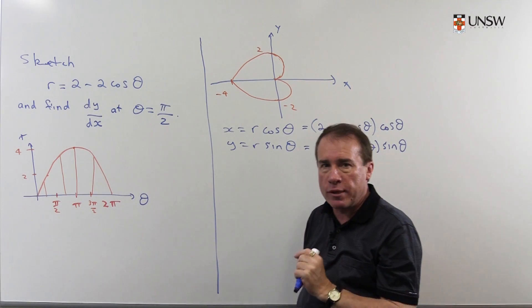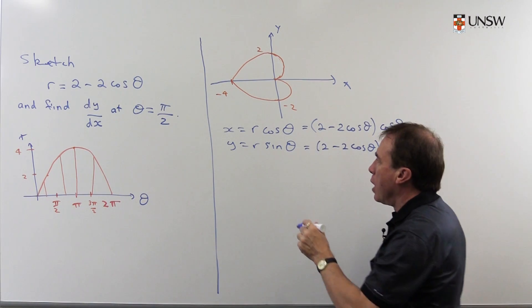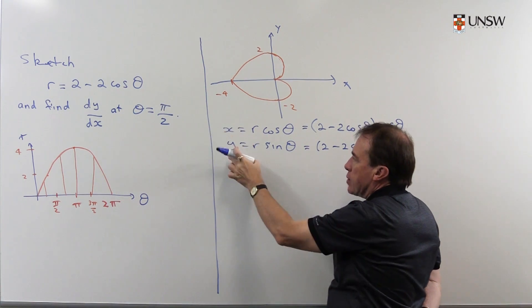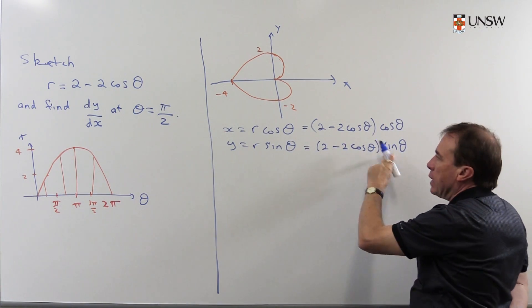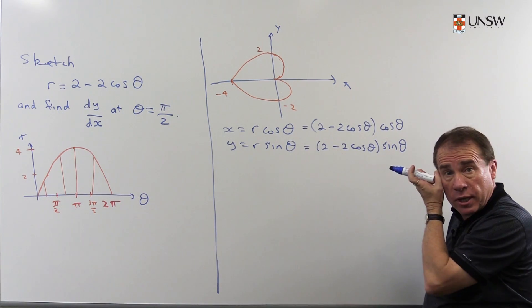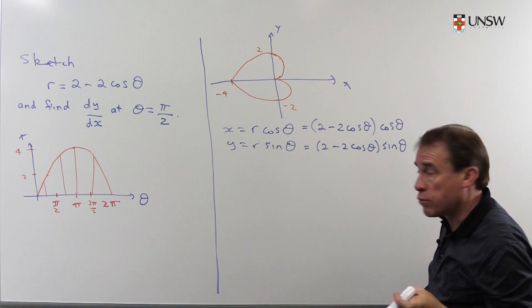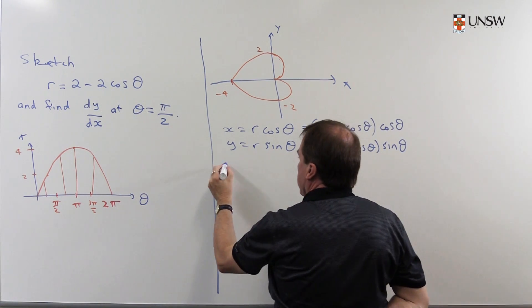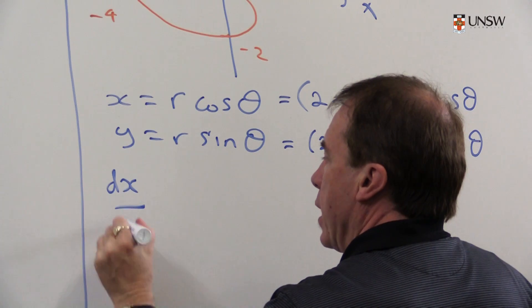You can think of these as parametric equations now, and so I want to work out dy/dx. I'm going to work out dy/dθ divided by dx/dθ. You could expand this out and differentiate it, or you can just use the product rule. I think I'll just use the product rule. So I'm going to write down dx/dθ.